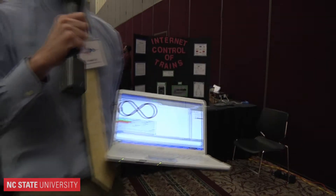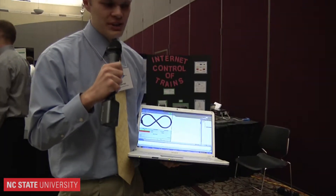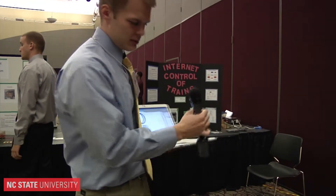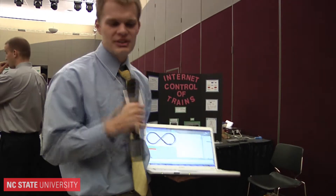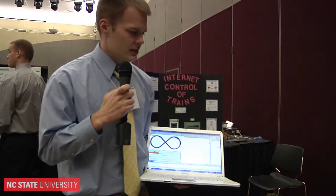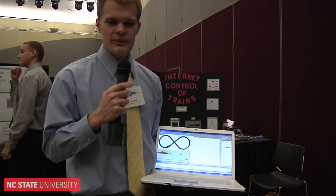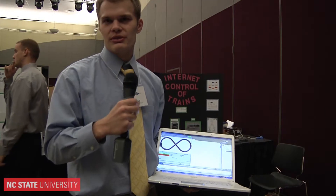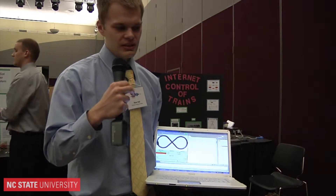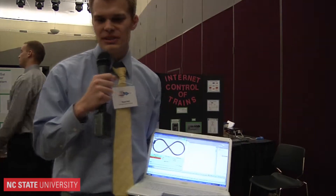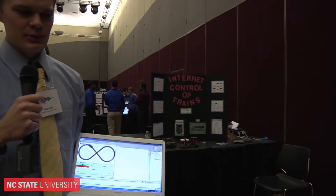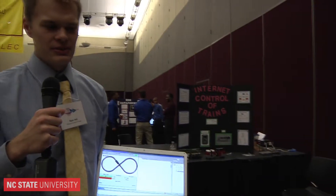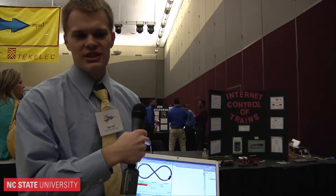How we did that was we basically built a circuit to control the motors for the main engine. And we have a microcontroller and a boxcar that's connected to the main engine. The microcontroller sends out signals to the engine and controls the speed of it.